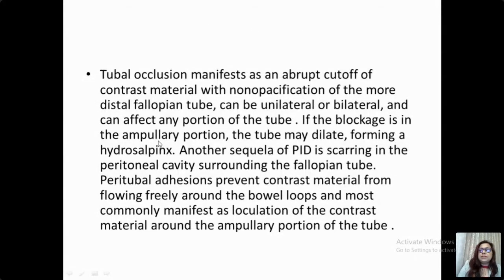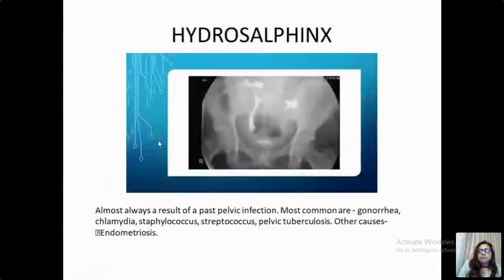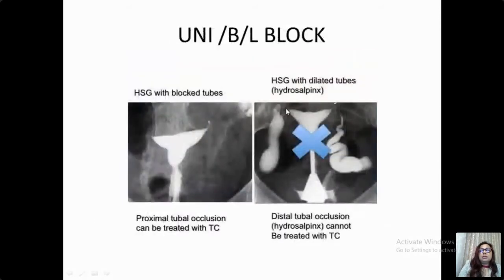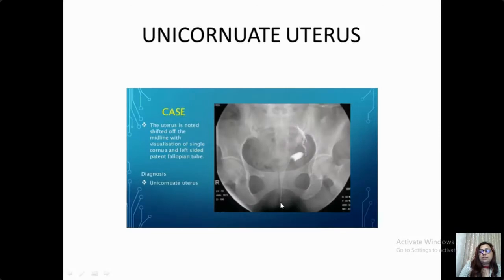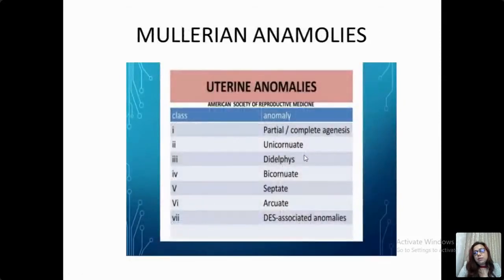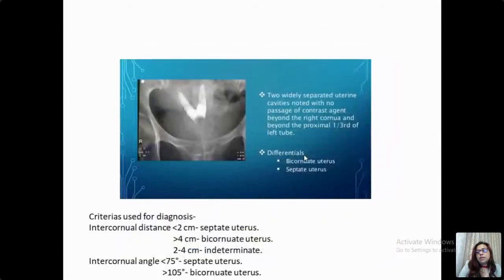Tubal occlusion manifests as an abrupt cutoff of contrast medium with non-opacification of the distal tube; it may be unilateral or bilateral and any part of the tube may be blocked. Hydrosalpinx is a tubular dilatation of the fallopian tubes, mostly occurring in the ampullary and fimbrial parts; the blockage may be bilateral or unilateral. Unicornuate uterus is very well diagnosed on HSG: the axis of the uterus is deviated to one side, a single cornua is seen at the top of the uterine cavity, and a single fallopian tube originates from it. Various Müllerian abnormalities can also be diagnosed, and there are criteria for distinguishing bicornuate from septate uterus.